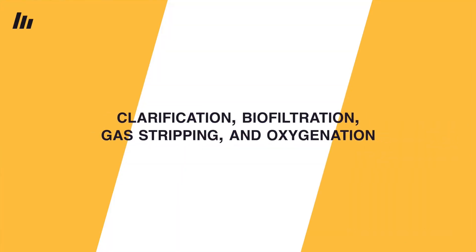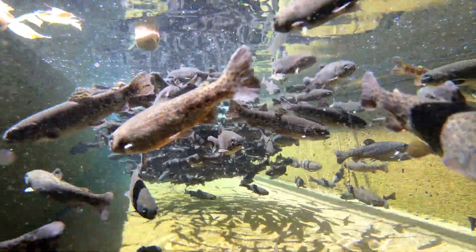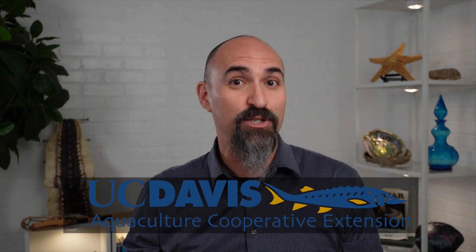We just covered the four processes of recirculating aquaculture systems: clarification, biofiltration, gas stripping, and oxygenation, and the various types of aquaculture technologies which can be employed to achieve those processes. I certainly didn't cover everything — I didn't even touch pH management, temperature control, and disinfection technologies. For those wanting to learn more about the pros and cons of recirculating aquaculture systems, you're going to want to watch this video right here. For UC Davis Aquaculture, I'm Dr. Jackson Gross.